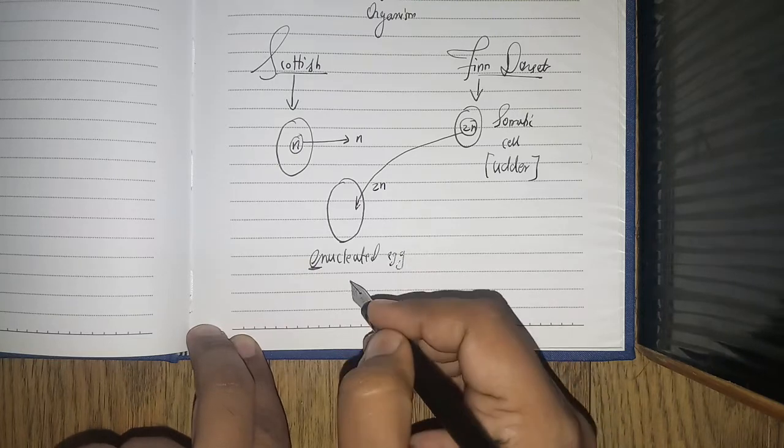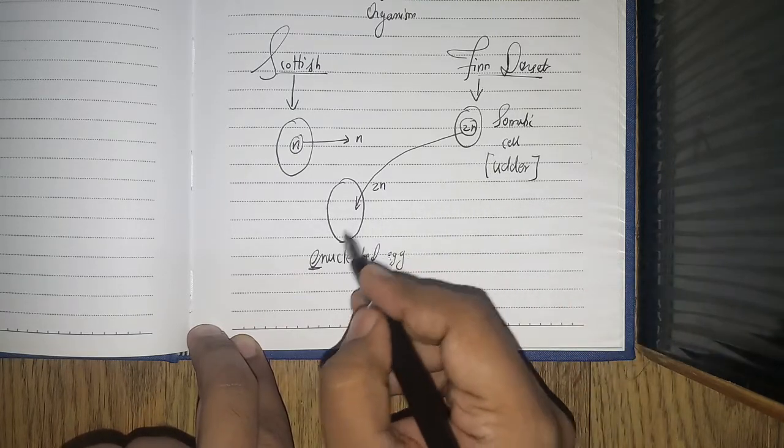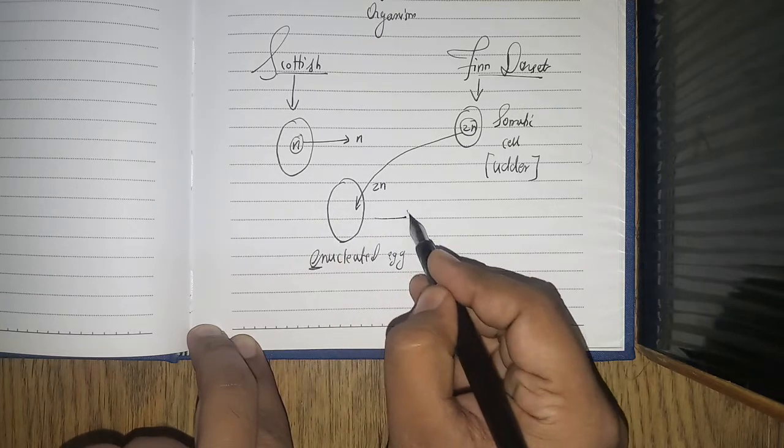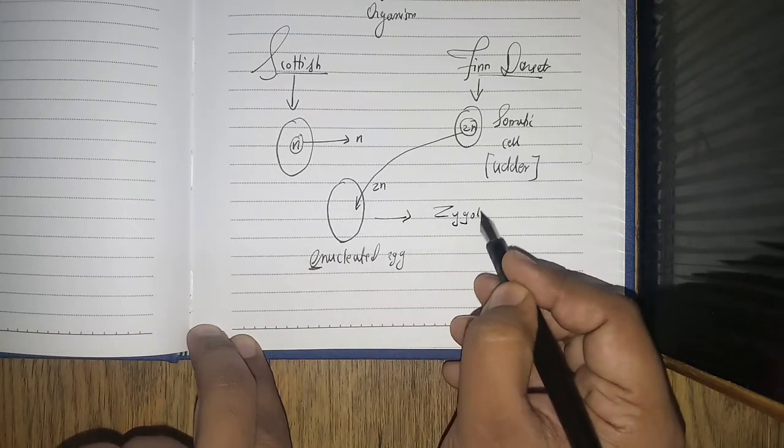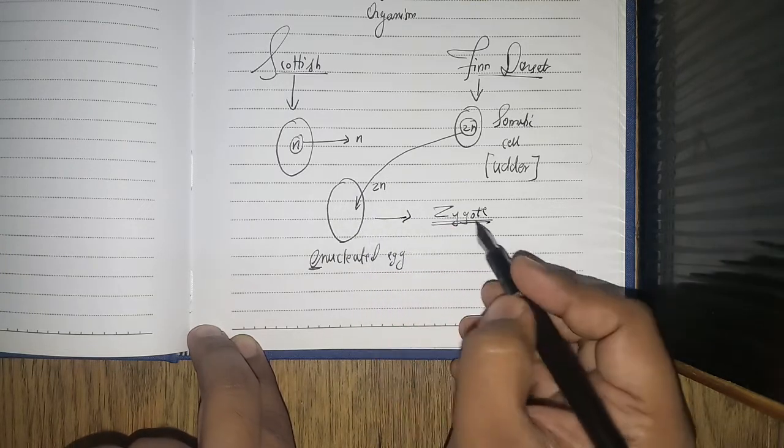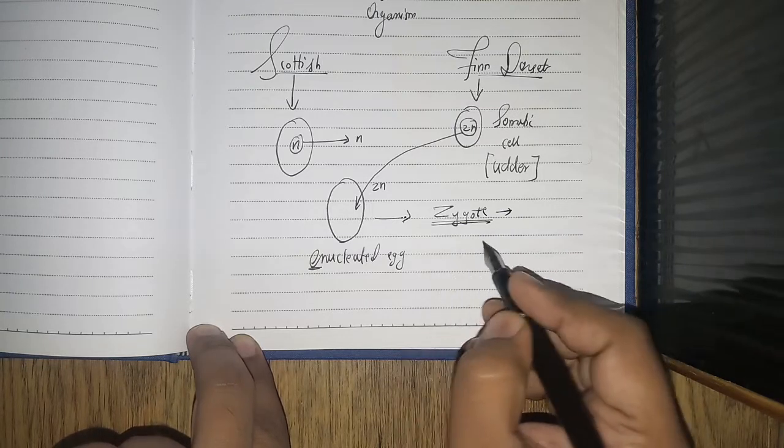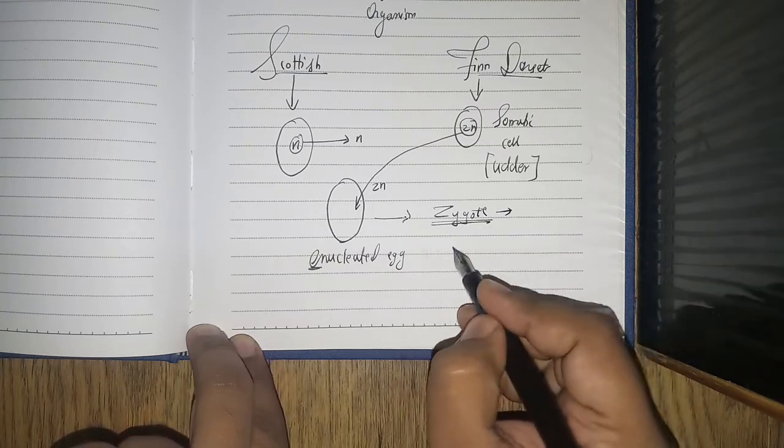This is done with the help of electric shock. So now this enucleated egg cell is exactly behaving like a zygote. See, this is an egg with 2n inside it, so it behaves like a zygote. And then this is placed again in the Scottish sheep uterus.